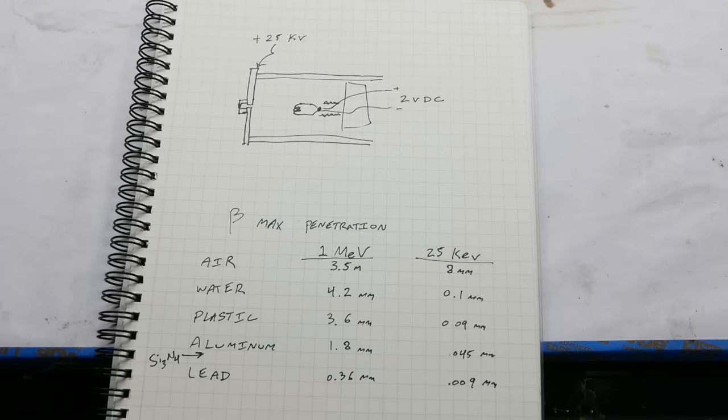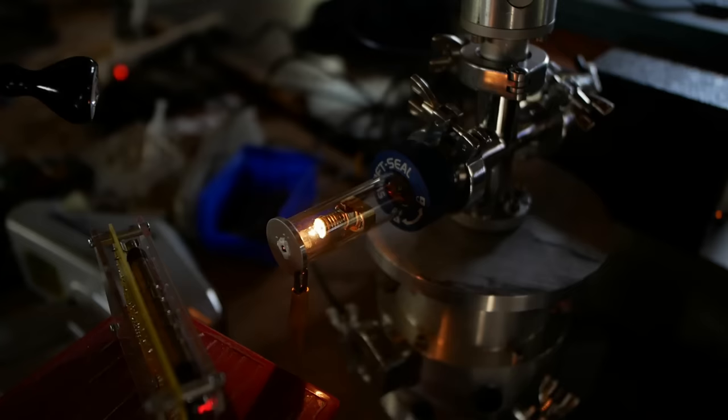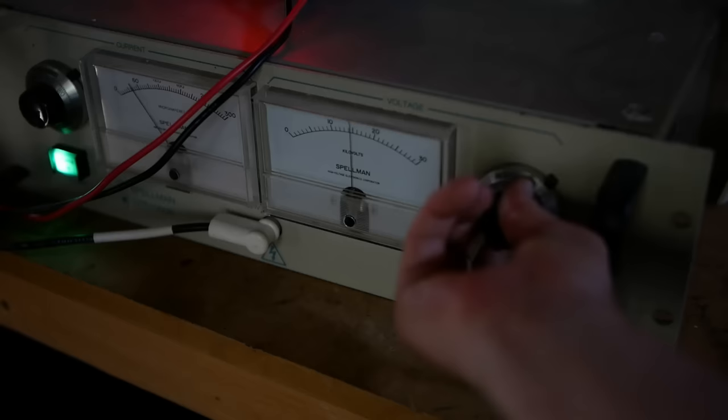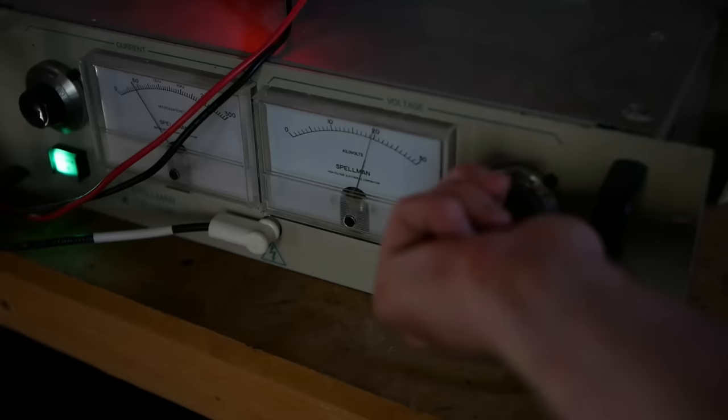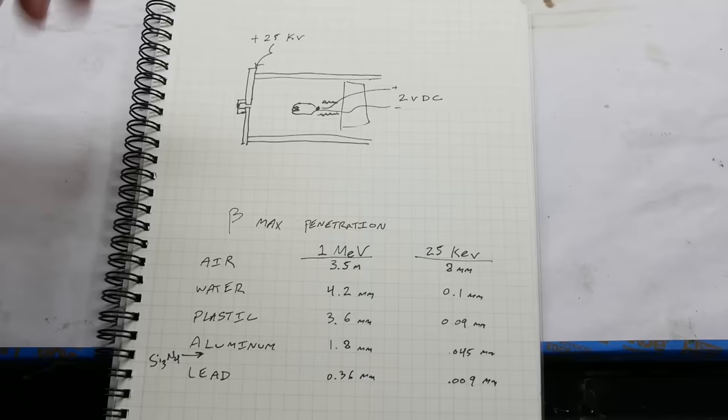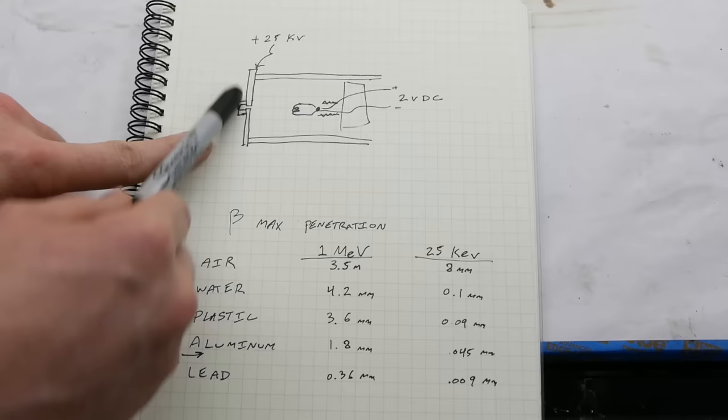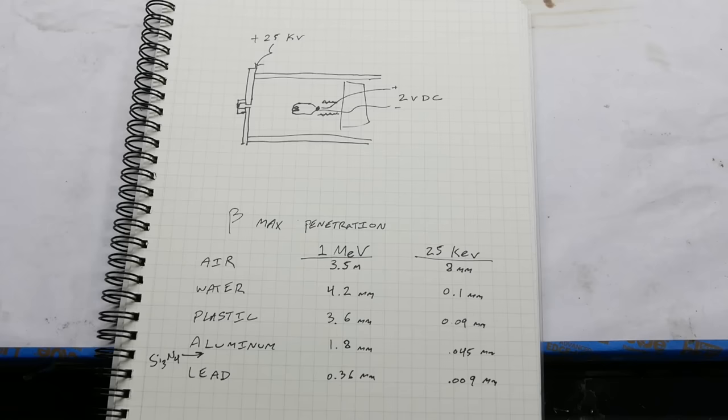So you might also be wondering, with all these electrons flying around in the high vacuum, is this thing producing x-rays? Yeah, you betcha. It's built exactly like an x-ray tube. The thing is, today we're going to be using a supply that maxes out at 300 microamps, so it's significantly less powerful than a medical imaging tube. And also, we don't have any hard metal targets out here. This is aluminum. If it were tungsten or something, we'd be producing much harder x-rays. But keep in mind, it produces a lot of x-rays.